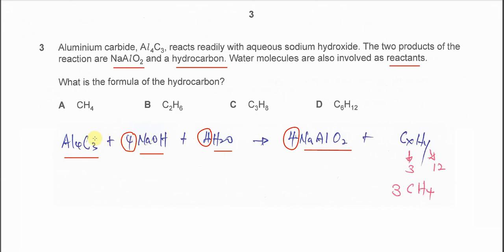Now carbon is three on the left, so the X number is three. We know it's three carbons.